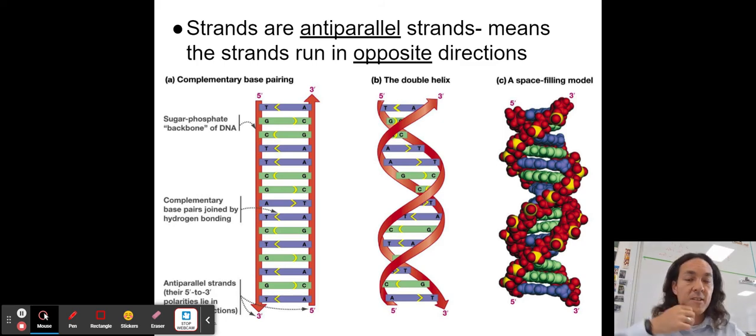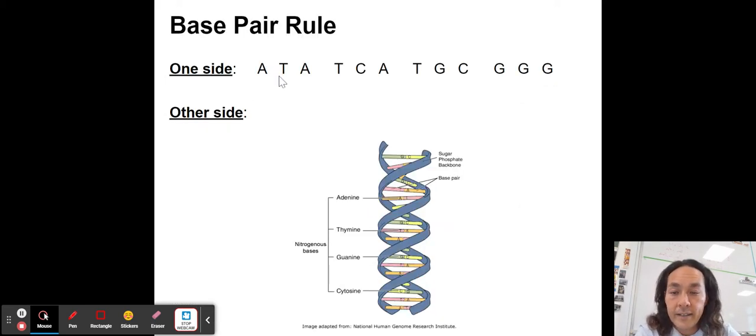The strands run in opposite directions. So I told you, think about a highway, one going one direction and the other highway going the other. And this helps to make sure that DNA has the right major and minor grooves and the right shape, which is really important because DNA gets read by enzymes. So it has to have the right shape to be read by those enzymes. Don't worry about these numbers, five primes and three primes. If you're interested in that, that's more of an AP biology thing, but it's just helping to determine the directionality of DNA.